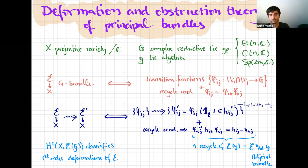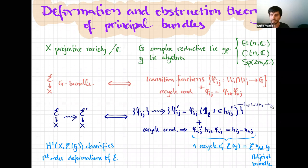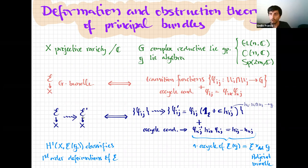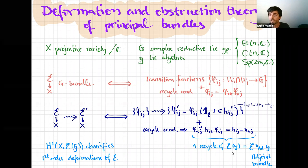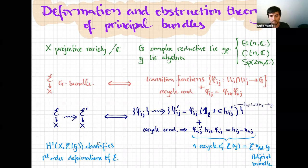If we modify slightly these transition functions by some elements in the tangent space of the group — the Lie algebra — we are able to construct another G-bundle very close to the original. If we ask the new transition functions to respect the cocycle condition, we are asking these new pieces to satisfy the 1-cocycle condition for the adjoint bundle. In this sense, H1 of the adjoint bundle EG classifies the first order deformations of our principal bundle.